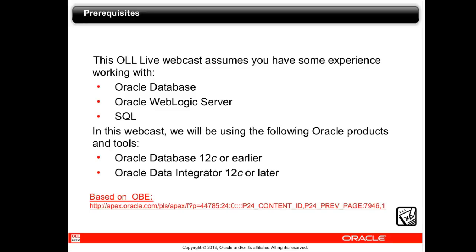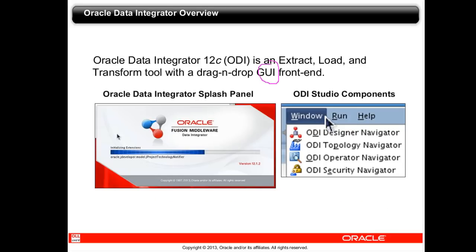We're going to be using database 12C and data integrator 12C. Data integrator shipped just about a couple weeks ago, and hopefully you all saw the presentation last Tuesday announcing formally 12C for ODI as well as for Golden Gate. So it's a GUI tool with all kinds of drag and drop. The demonstration happens to be under Linux, but it would work perfectly well under Windows as well. Today we're preparing the repositories for Monday, Wednesday, and Friday, where we'll spend a lot of time in design and topology.